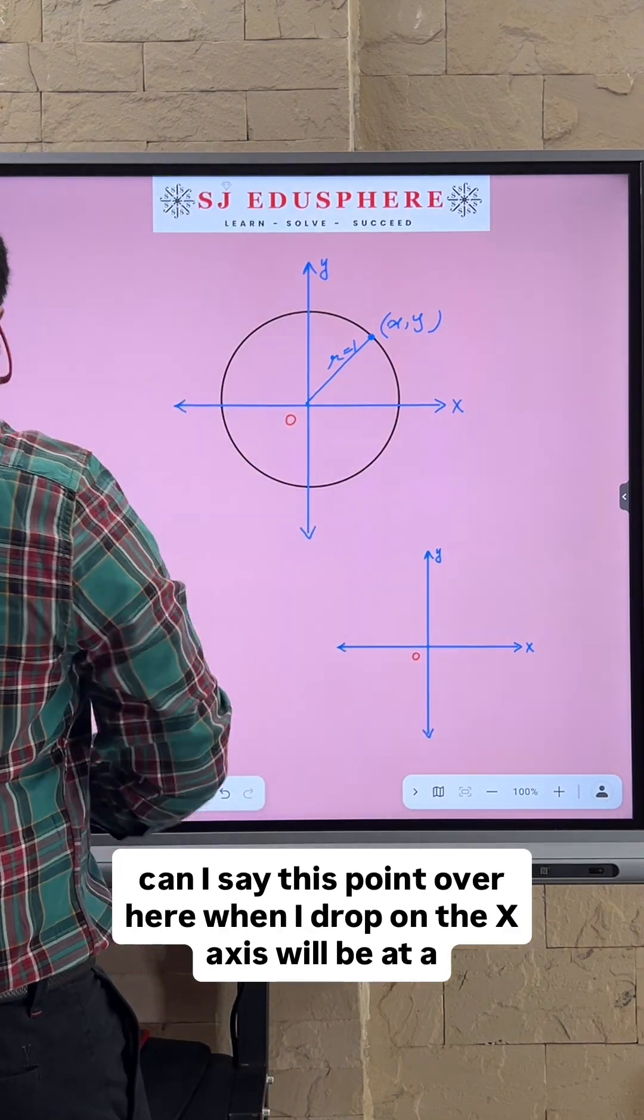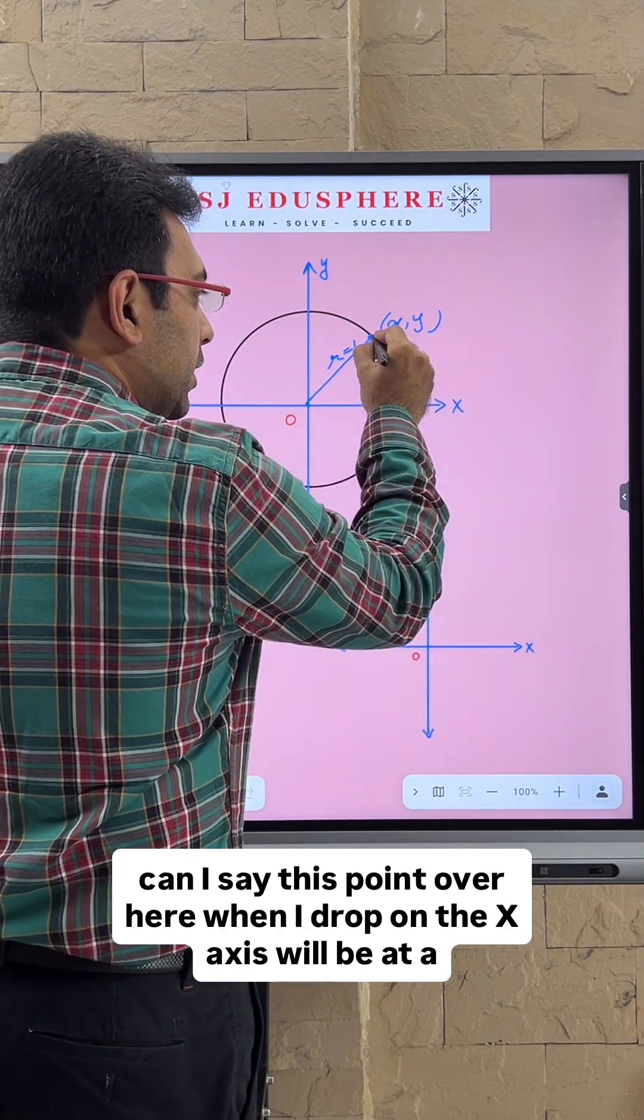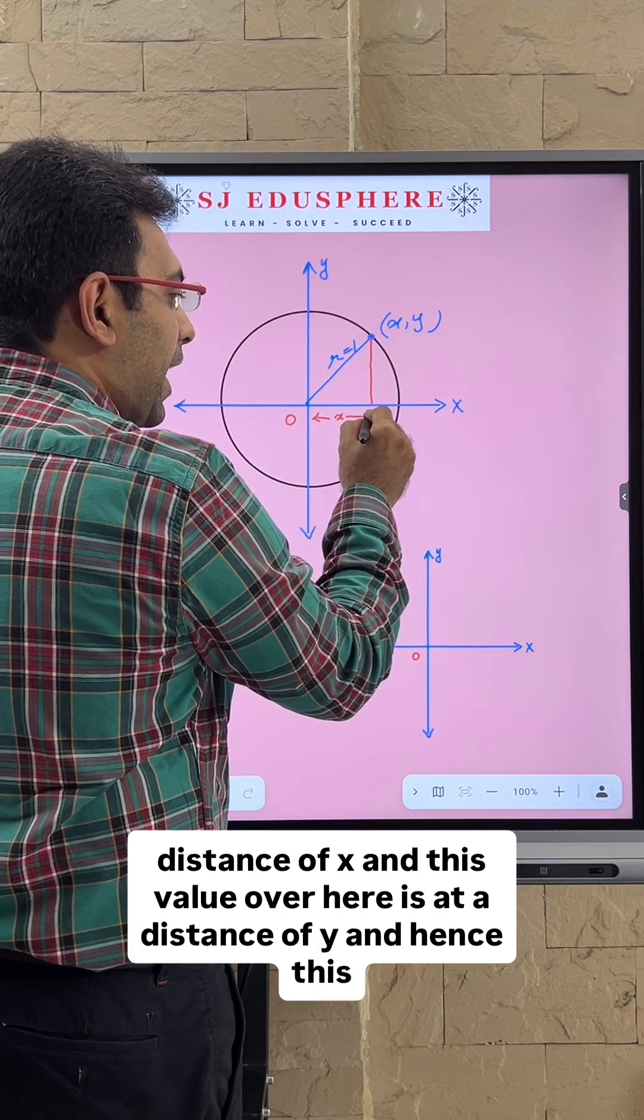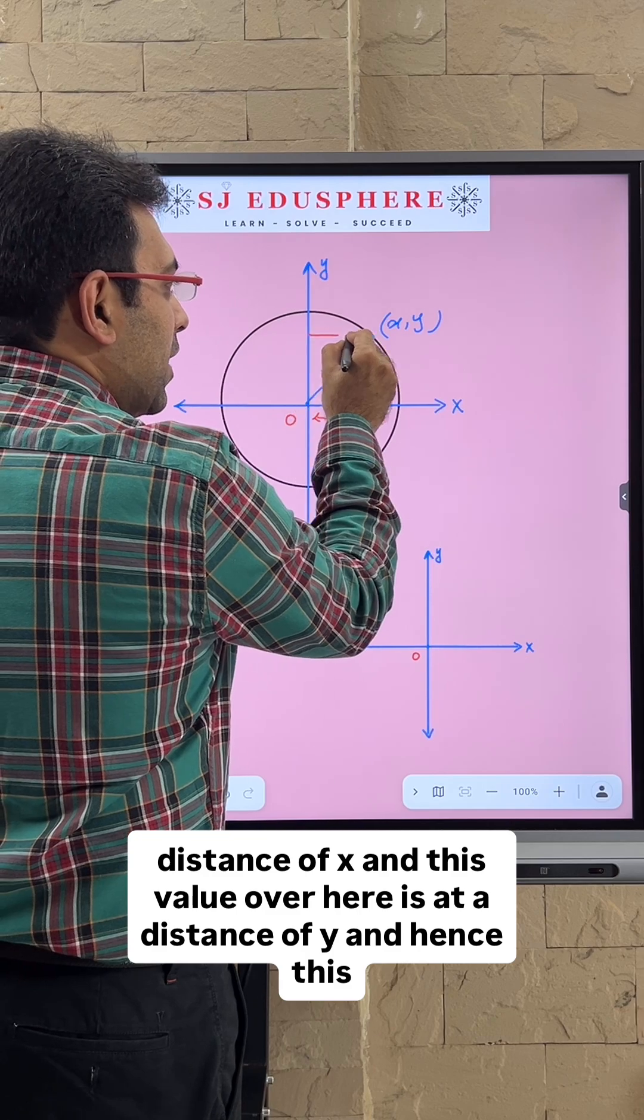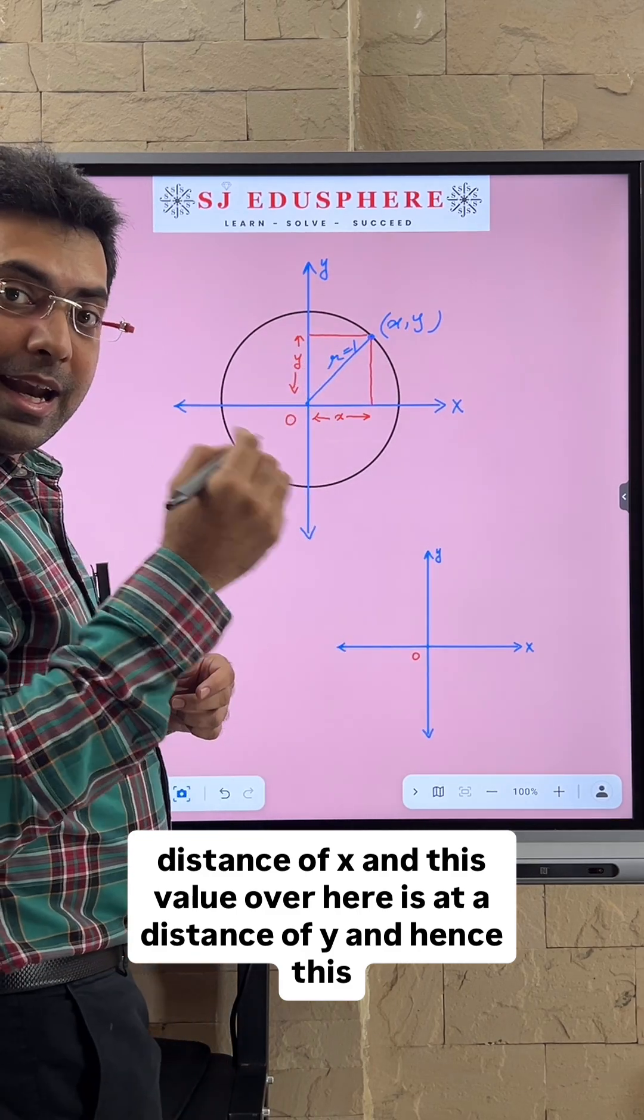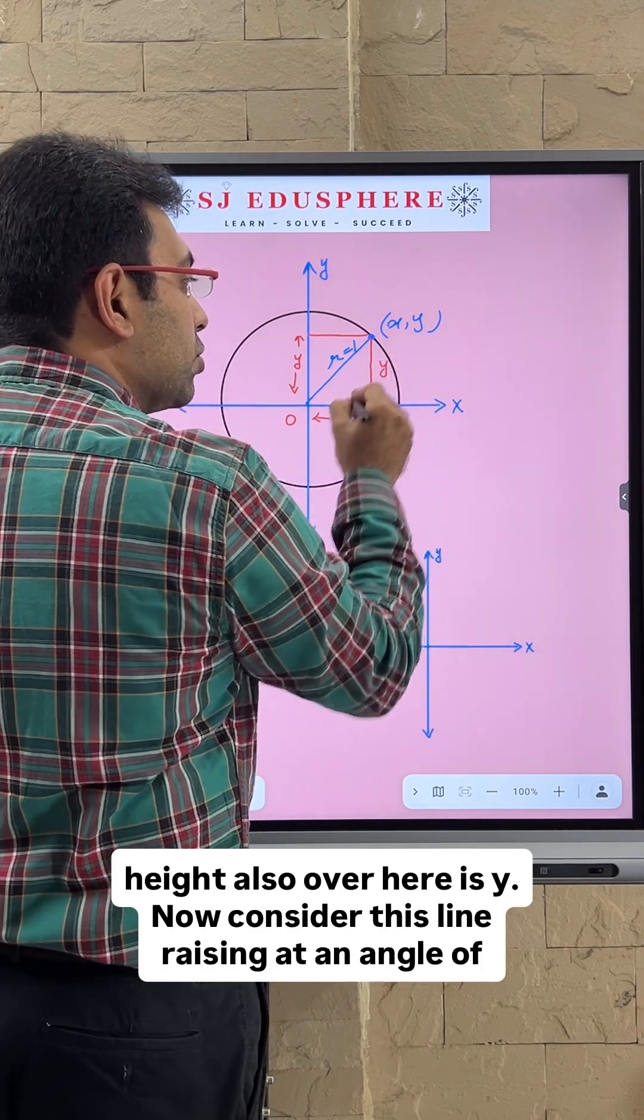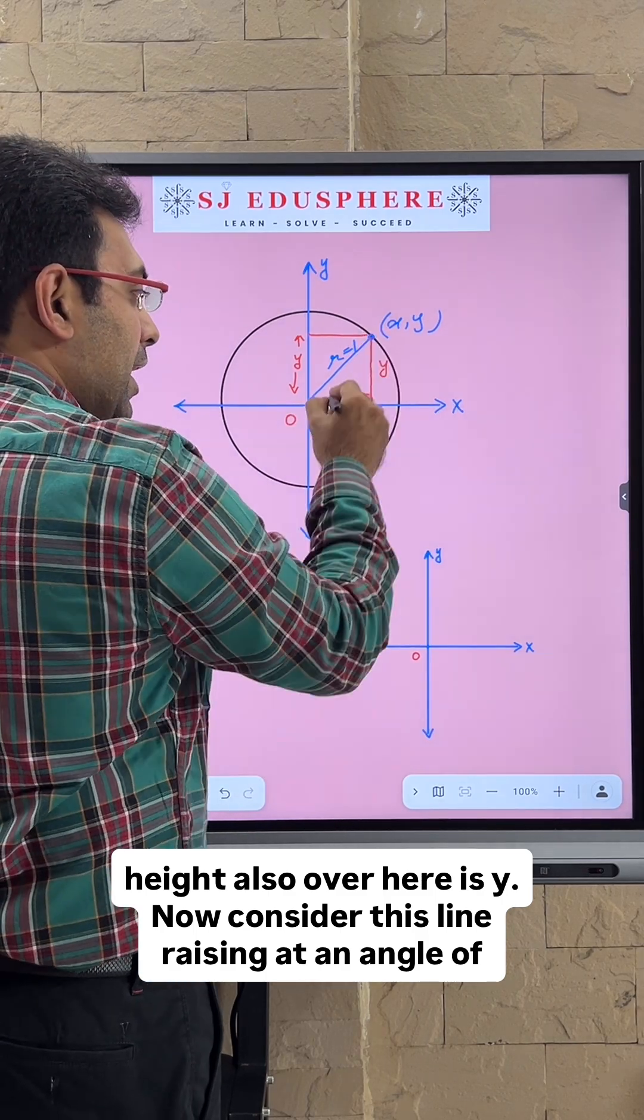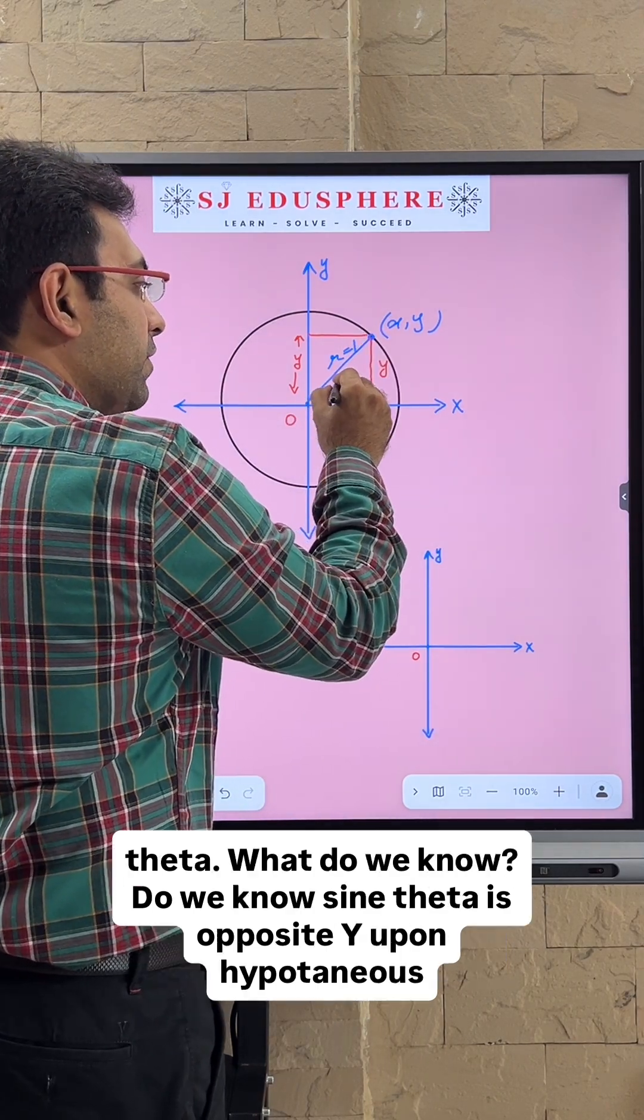Now when I drop this point onto the x-axis, it will be at a distance of x, and this value over here is at a distance of y. Hence this height over here is also y. Now consider this line rising at an angle of theta.